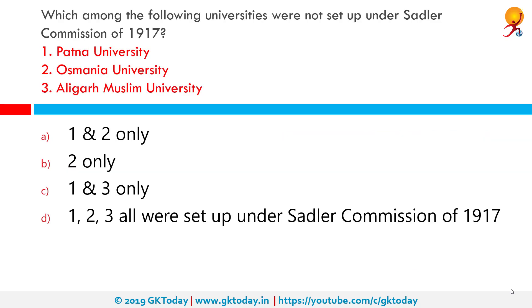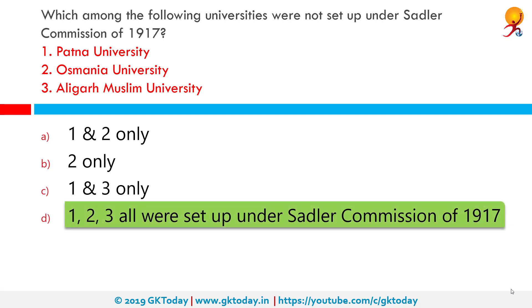Which among the following universities were not set up under the Sadler Commission? Number one: Patna University. Number two: Osmania University. Number three: Aligarh Muslim University. The correct answer is all of them were set up under the Sadler Commission. In 1917, the government appointed the Calcutta University Commission to study and report on the problems of university education. The commission is also known as the Sadler Commission, after the name of its chairman, Dr. Michael E. Sadler, the Vice-Chancellor of the University of Leeds.